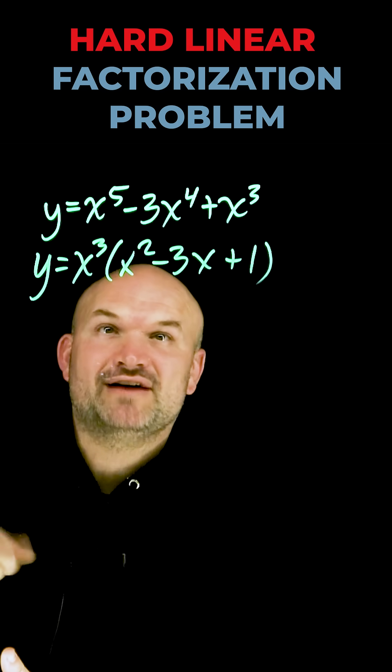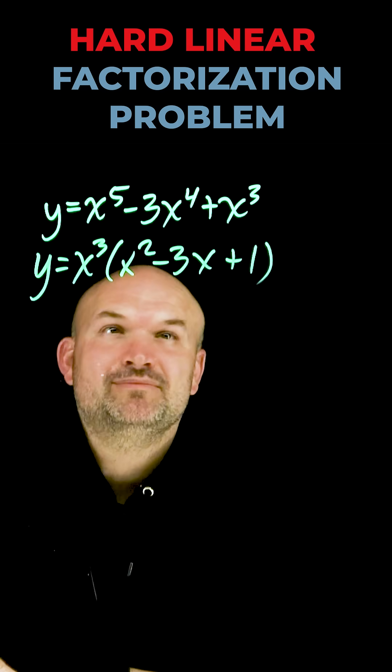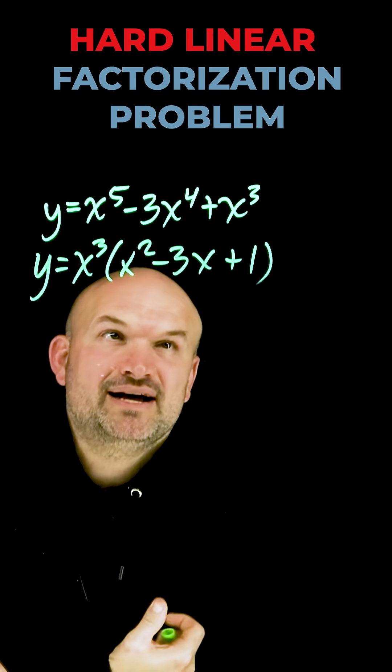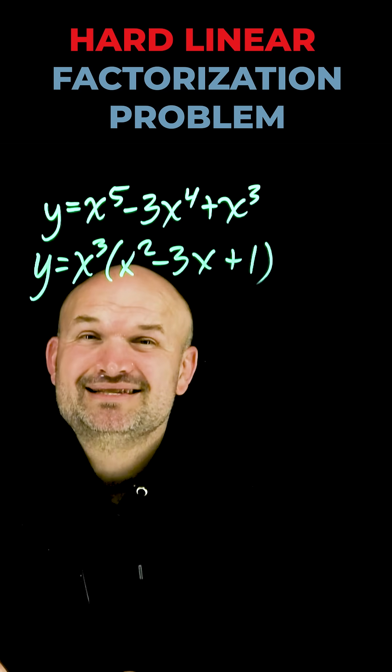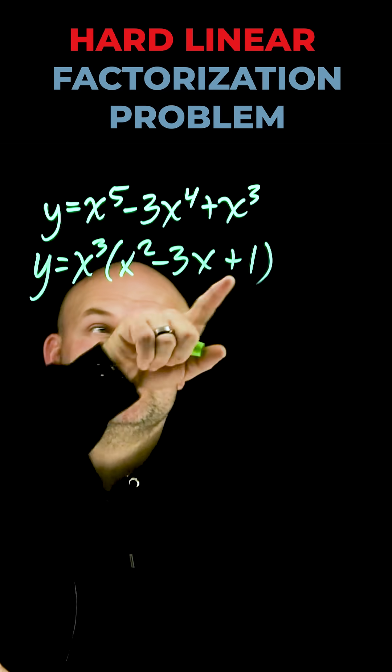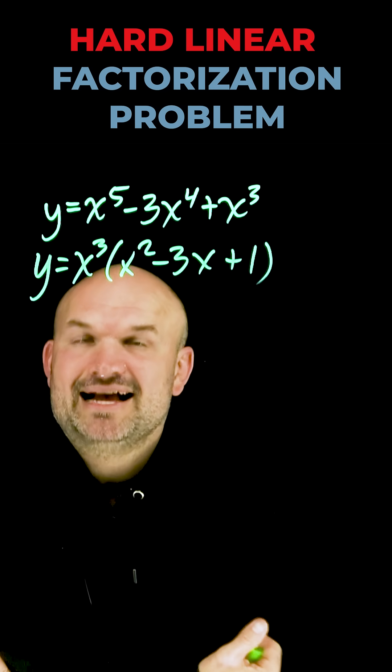But to write this as a linear factorization, I need to break down this x squared minus 3x plus 1, and unfortunately by a quick little check we recognize this is not factored across rational numbers. There's no two numbers that multiply to give me 1 that add to give me negative 3.